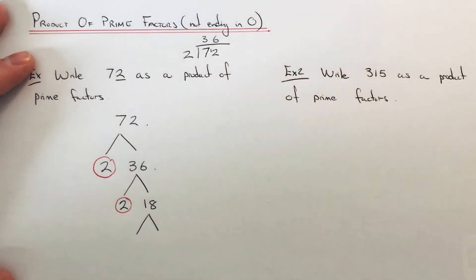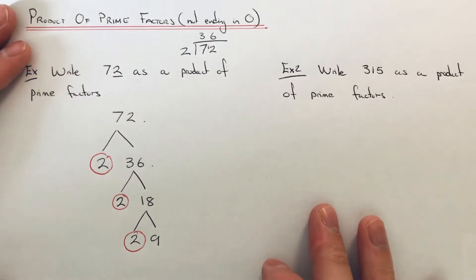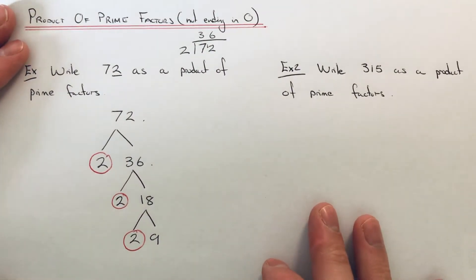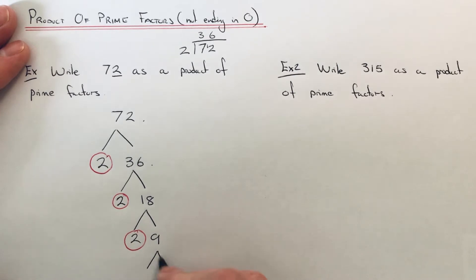2 is a prime number again. 9 isn't, so I'm going to split up the 18. Again it's in the 2 times table, so 2 times 9 is 18.